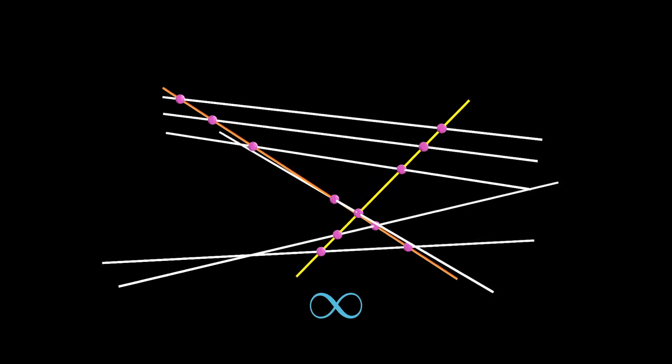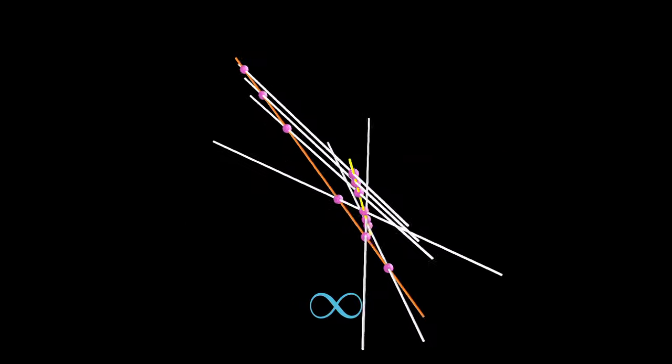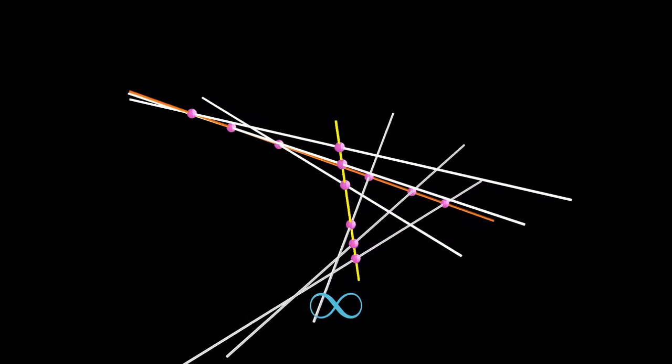We first pick a point on the first line, then we pick a point on the second line, and then we draw the line between the two points.